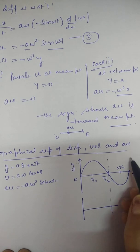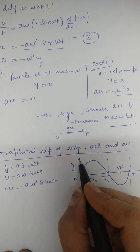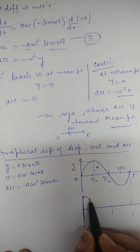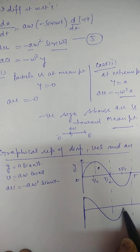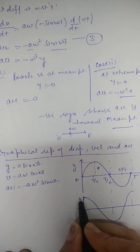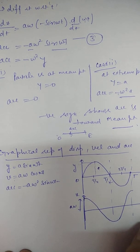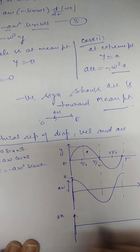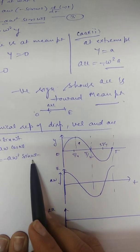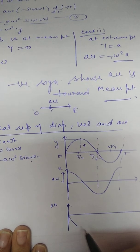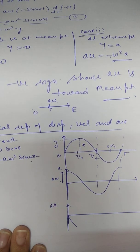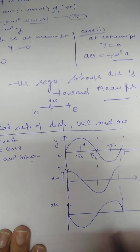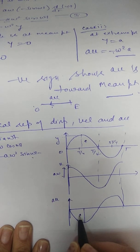Below that, the velocity graph is a cosine curve with amplitude Aω — this is the velocity versus time graph. The acceleration versus time graph is also a sine curve but starts from below (negative), because acceleration equals minus Aω² sin(ωt), so it is negative and has amplitude Aω².